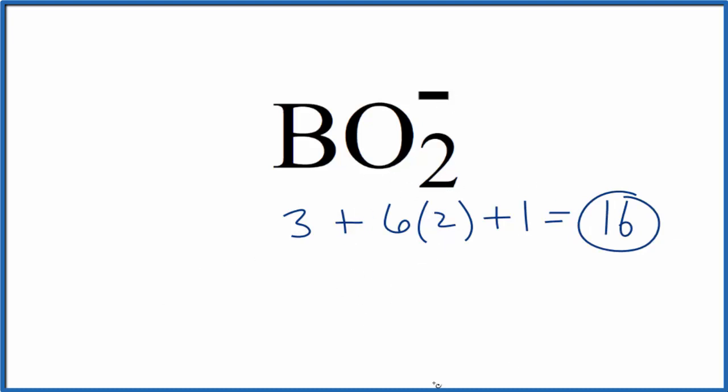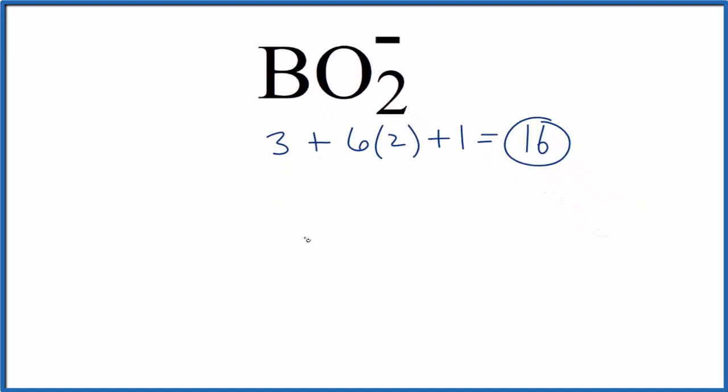We'll put the least electronegative element in the center, that's the boron, and then we'll put an oxygen on either side.